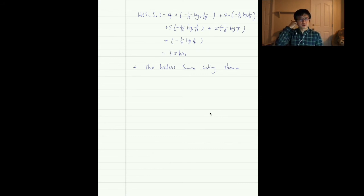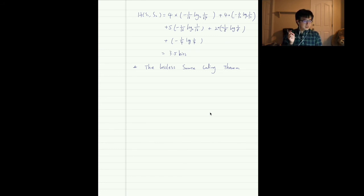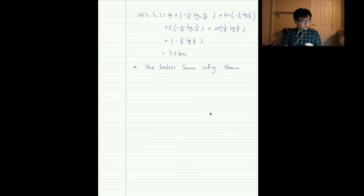Before introducing the theorem, let's note that the source coding theorem simply says the minimum number of bits needed to represent a DMS is basically the entropy. Let's define this rigorously. In practice, we do not code symbol by symbol — we consider N symbols together, denoted S^N, and pass it through a source encoder.